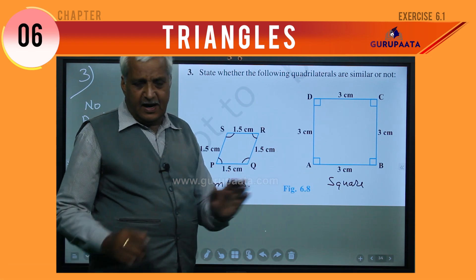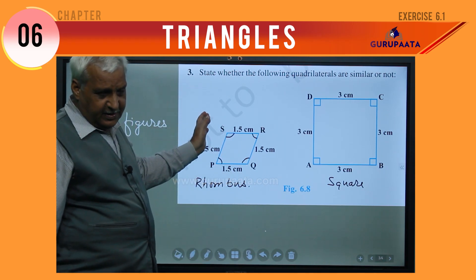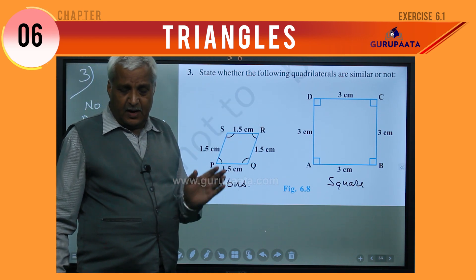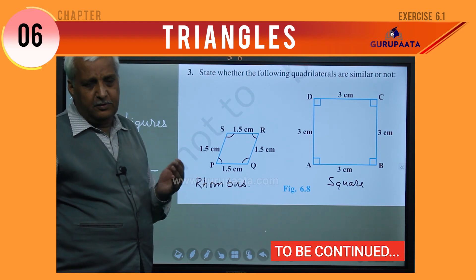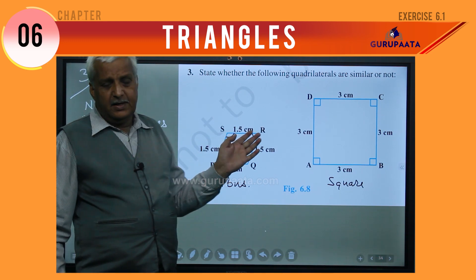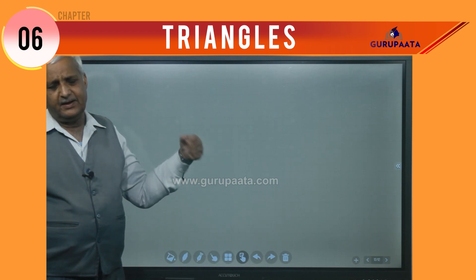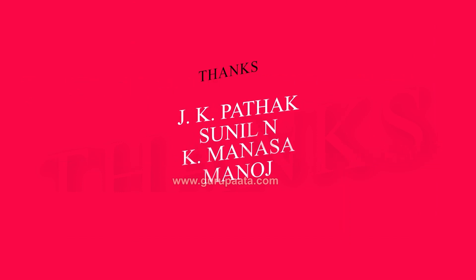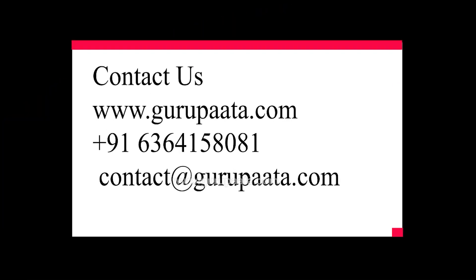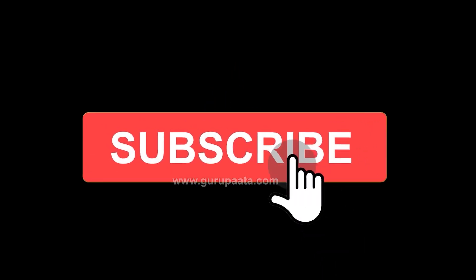Question Number 3: state whether the following quadrilaterals are similar or not. The first figure has each side equal to 1.5 cm, but all angles are not equal — some are less than 90 degrees and some are more than 90 degrees. This figure is called a rhombus. The second figure has all sides equal to 3 cm and all angles equal to 90 degrees — this is called a square.